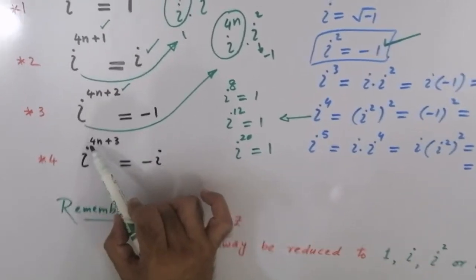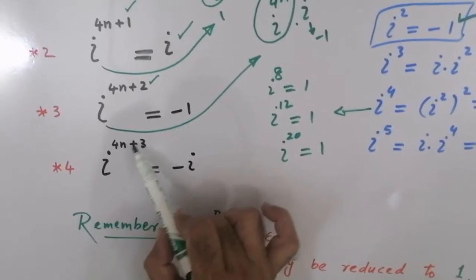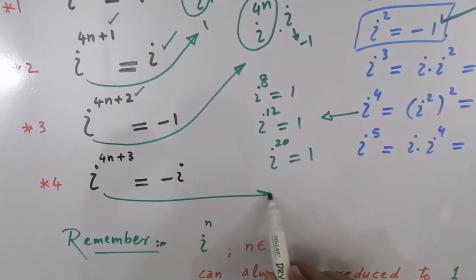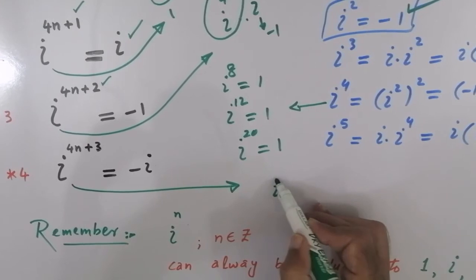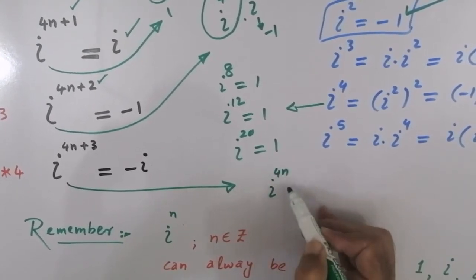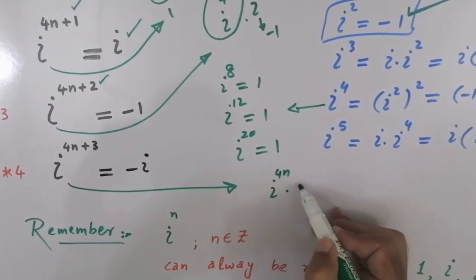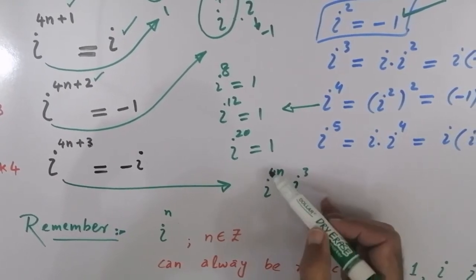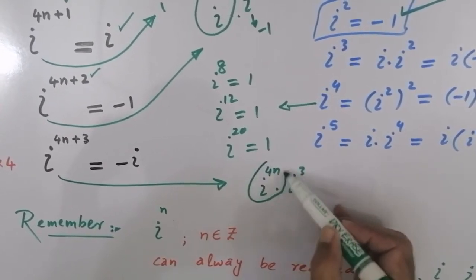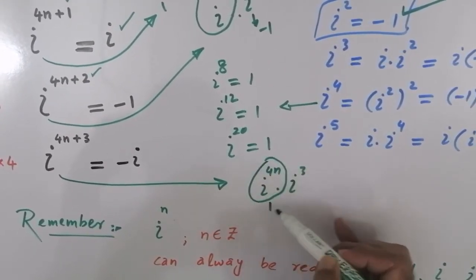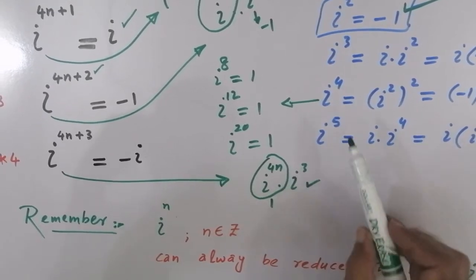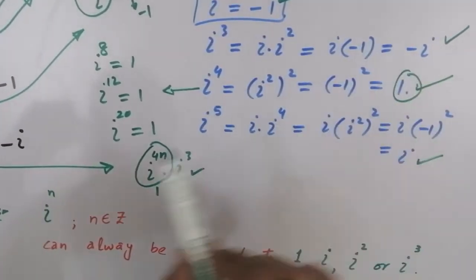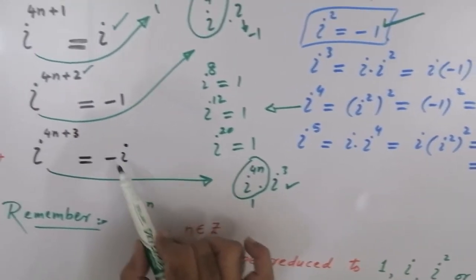یہاں IOTA raised to power 4n plus 3 ہے۔ اس کو ہم split کرتے ہیں: IOTA raised to power 4n into IOTA raised to power 3۔ IOTA⁴ⁿ سے 1 آتا ہے اور IOTA cube کا answer ہے minus IOTA۔ تو the last answer will be minus IOTA.